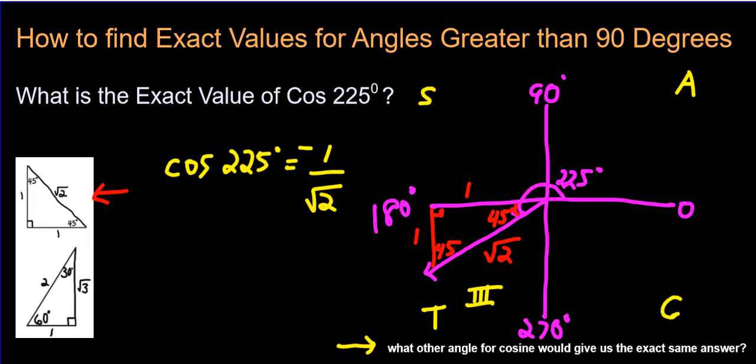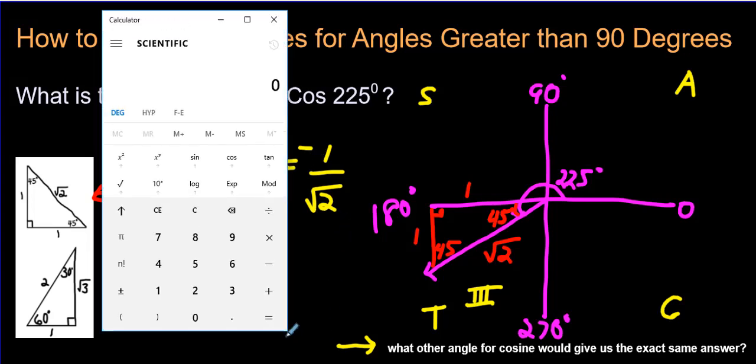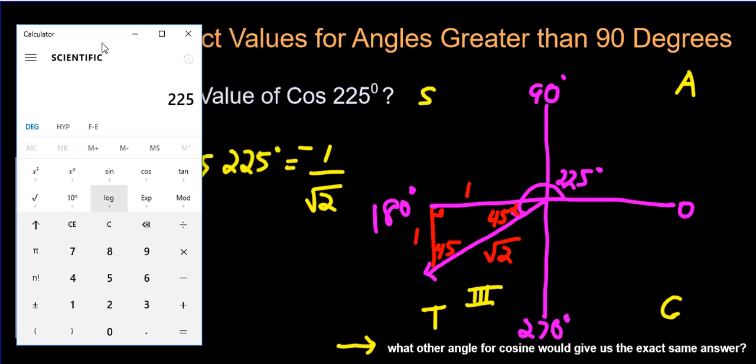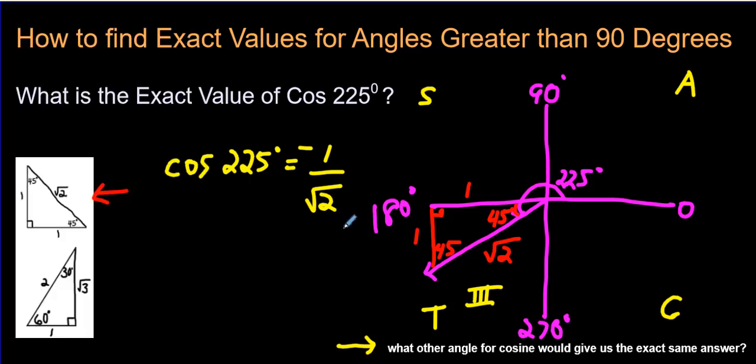We need to have the negative sign there. And the calculator, I'm going to pop that up here. The calculator, if we were to type in cos 225, we should have a negative answer, negative 0.707. And we can confirm that this exact value is true. We can go negative 1 divided by the square root of 2. Negative 1 divided by the square root of 2, and it's the exact same answer as what we just had. So the nice thing about this stuff is you can confirm that you're getting the right answer using a calculator. We definitely got this right.